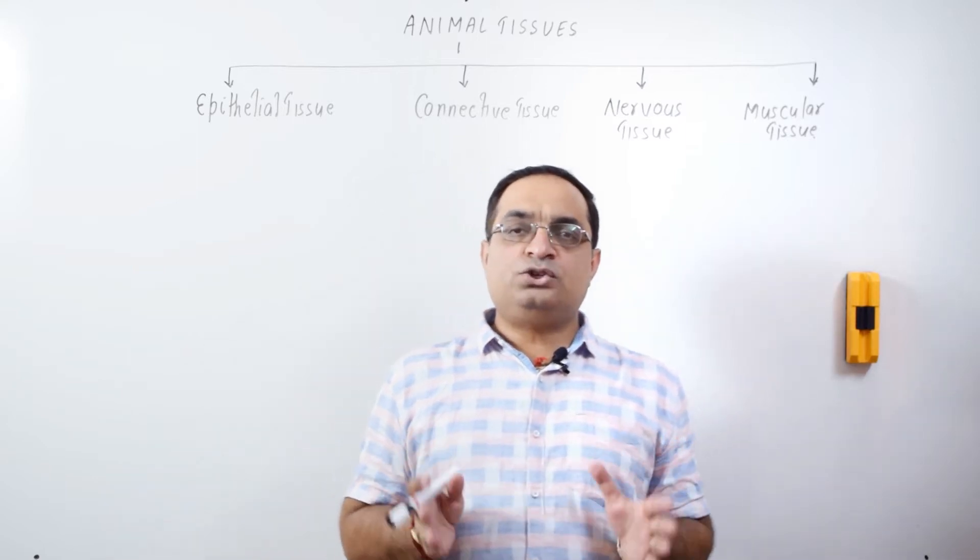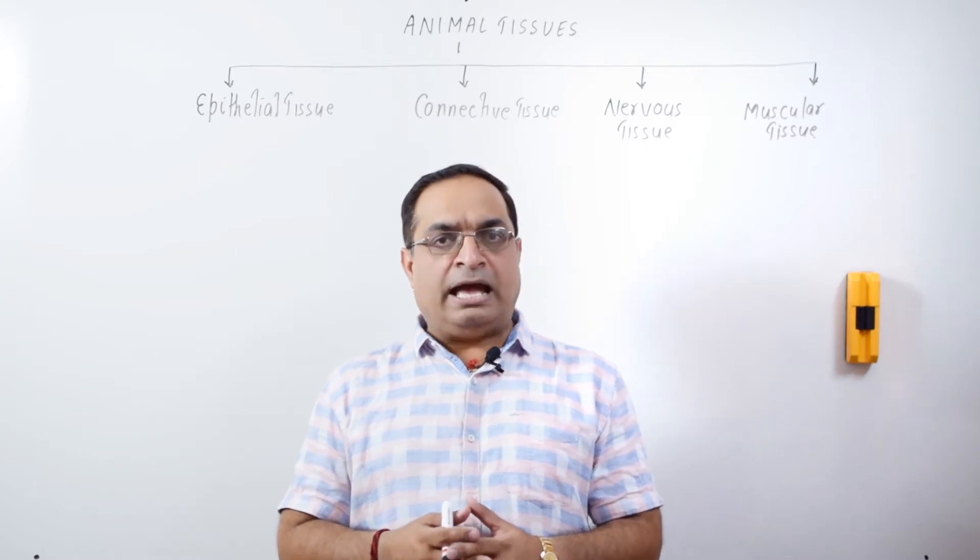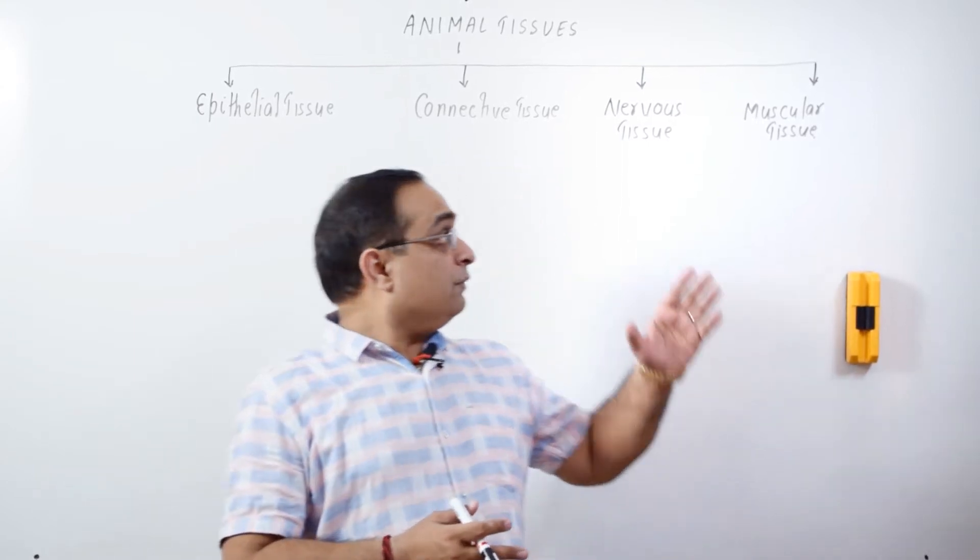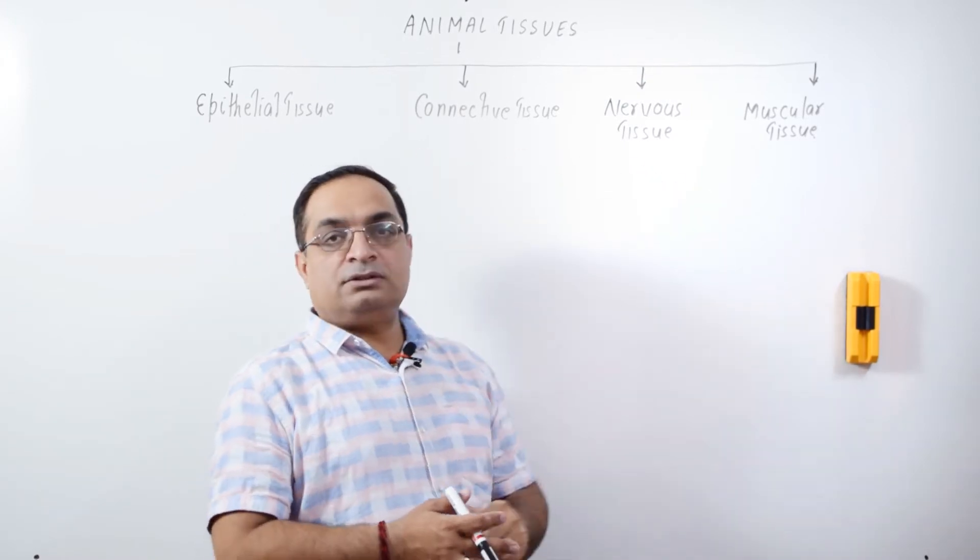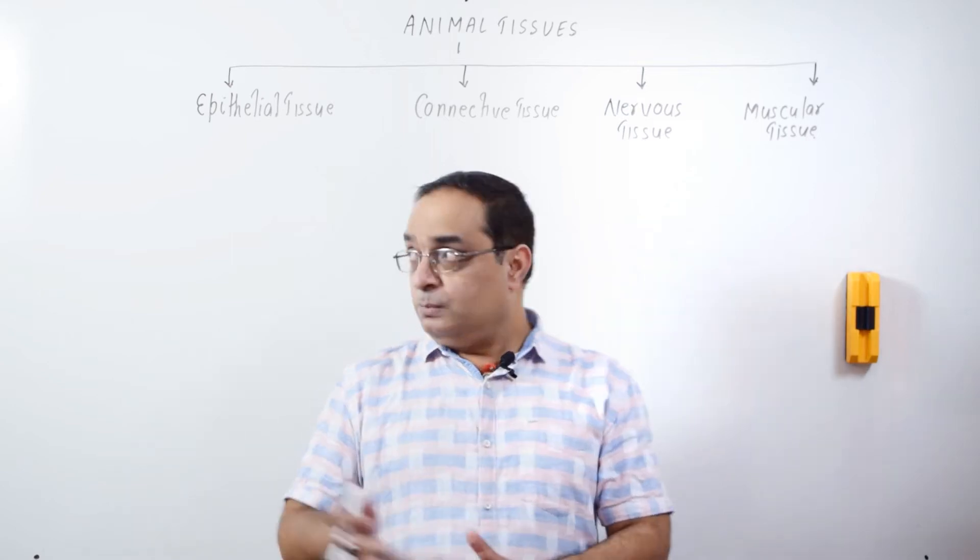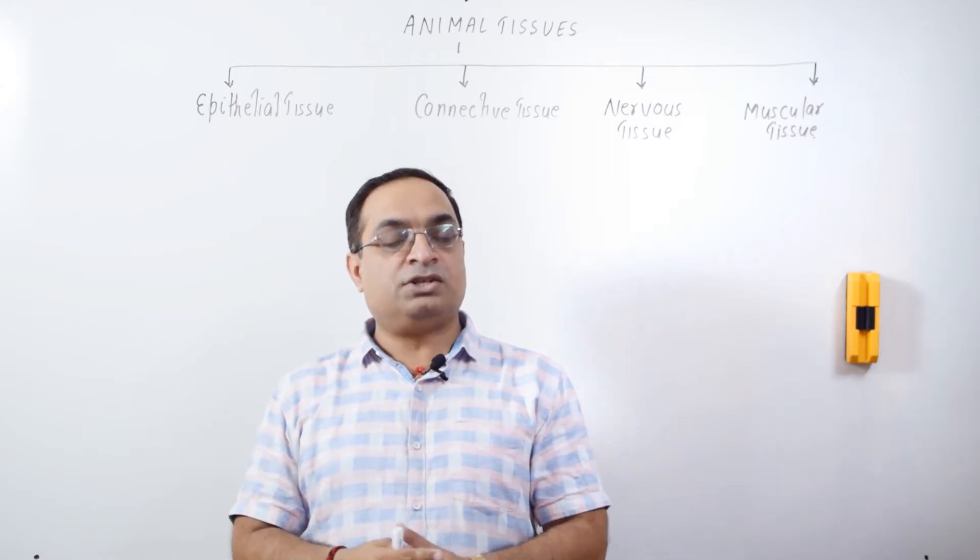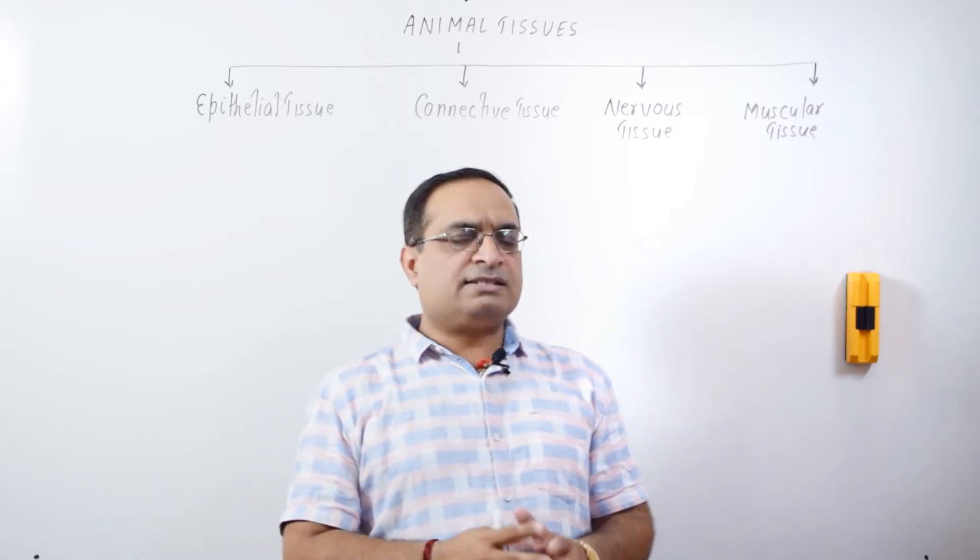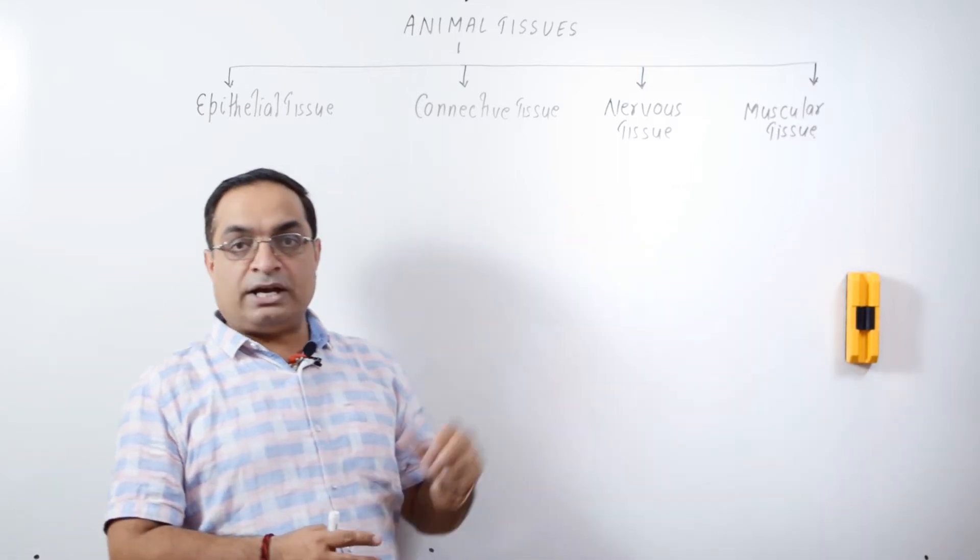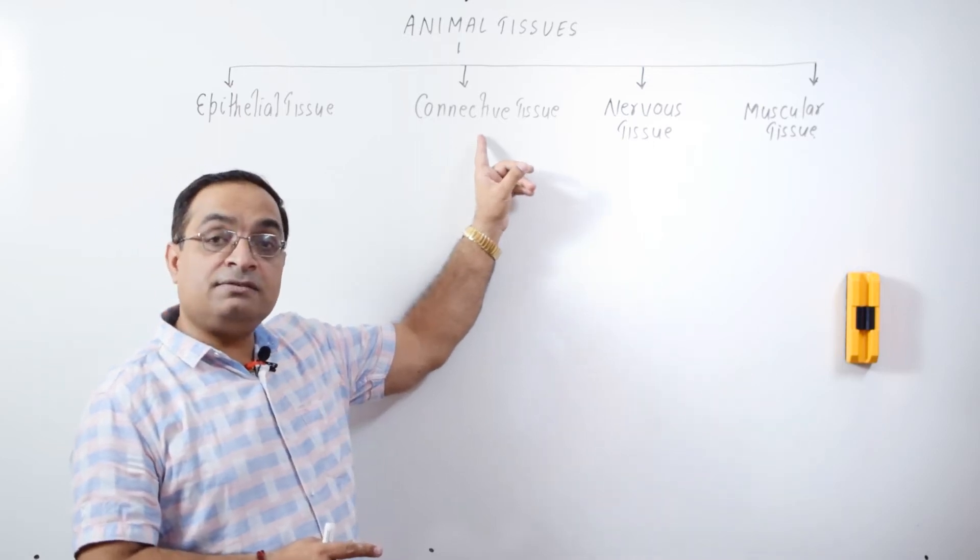As you know that tissue is a group of cells having similar origin and perform a particular function. There are four major types of tissues in animals body as you can see here: Epithelial Tissue, Connective Tissue, Nervous Tissue and Muscular Tissue. Study of tissues is Histology. Out of these four tissue types, the most abundant tissue in the body is Connective Tissue.